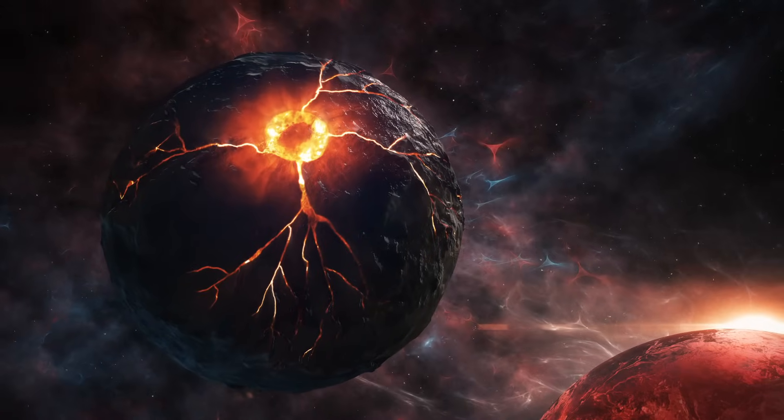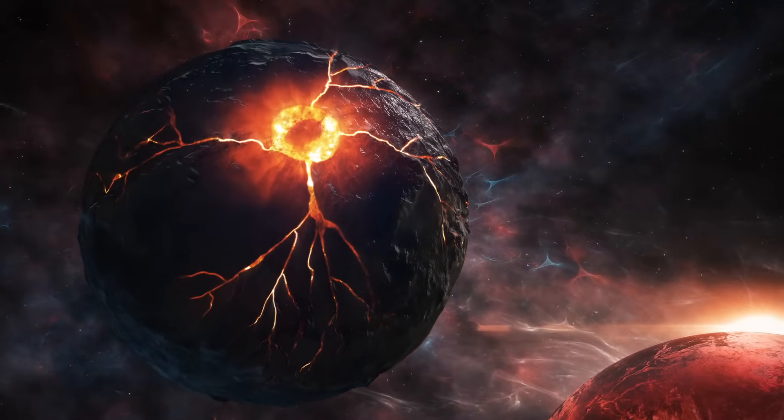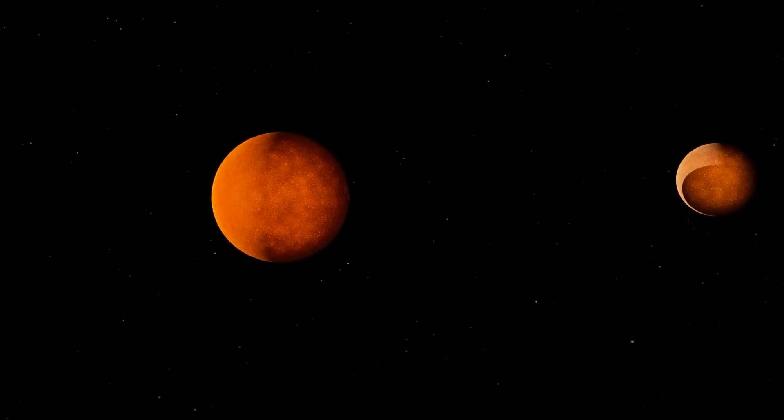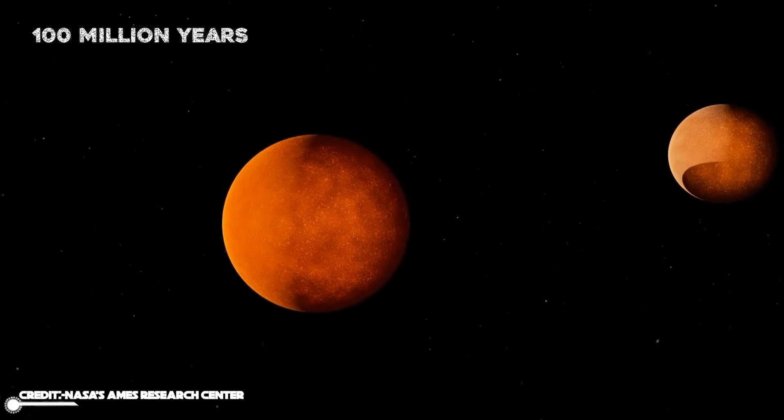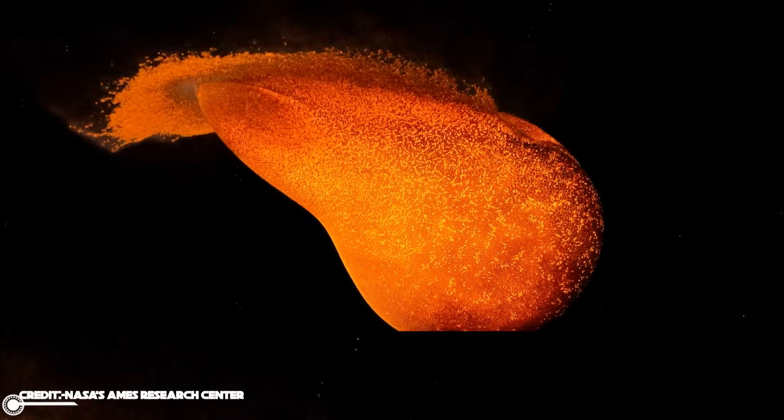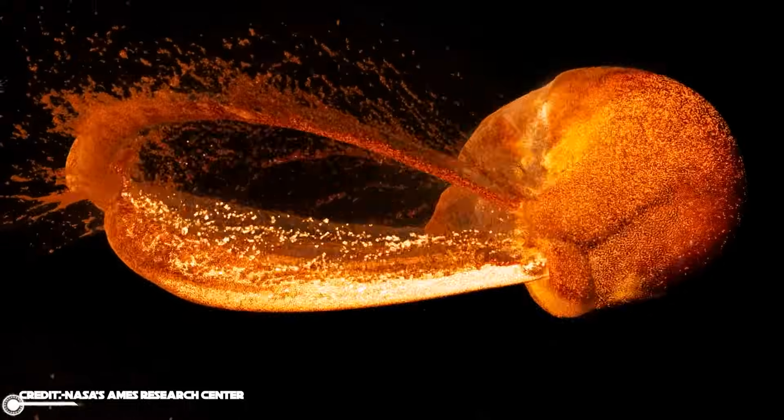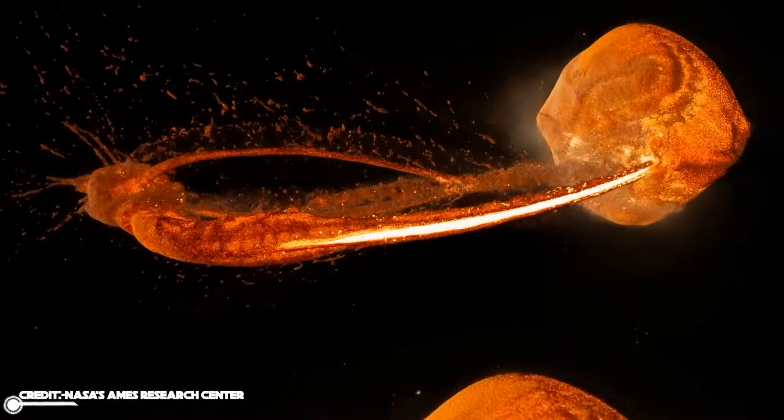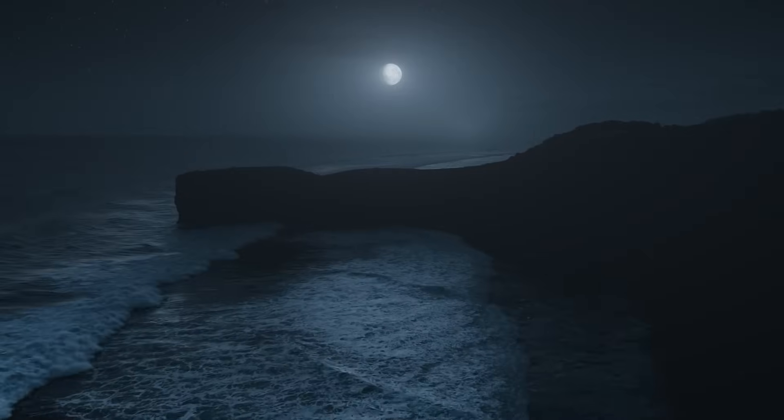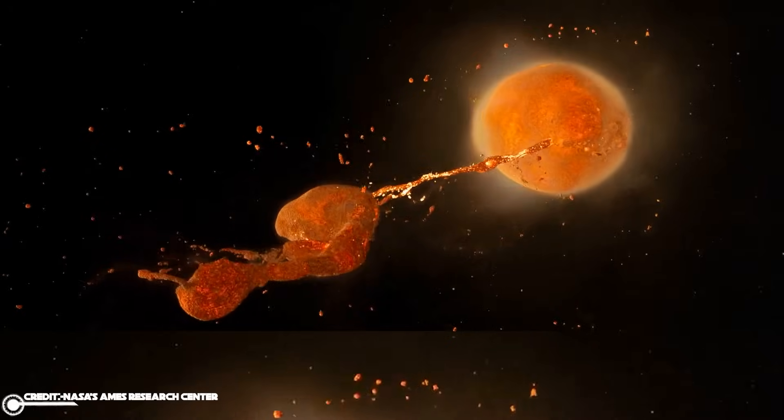The theory says that a Mars-sized protoplanet named Theia, after the Greek goddess of Sight and Heavenly Light, collided with Earth approximately 100 million years after its formation. This protoplanet, often referred to as the impactor, ultimately failed to achieve full planetary status. Sad for Theia, but good for us. How else could we have this beautiful view of the Moon at night?